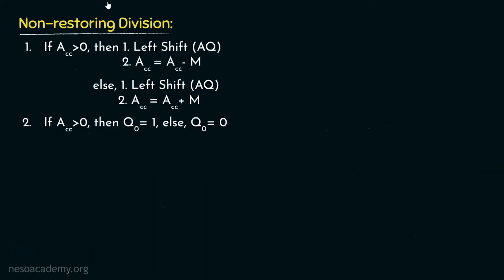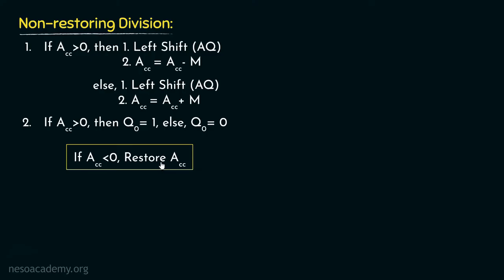If that is greater than zero, or positive, we are going to set Q0 to 1. Else we will set Q0 to 0. So this is going to be our newly modified sequence of operations. However, by the end, if the content of the accumulator is still a negative value, that will mean we have subtracted one time too many. In that case, we will have to perform the restoration one last time, and this will be the only time we perform the restoration procedure. Let me walk you through the process for better illustration.